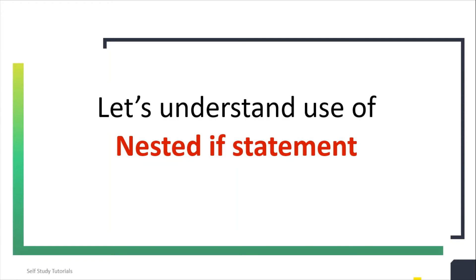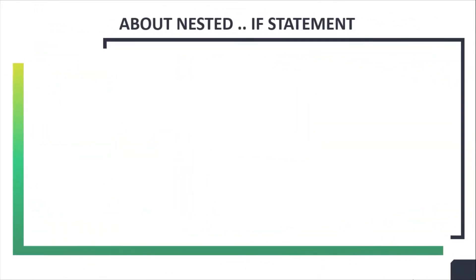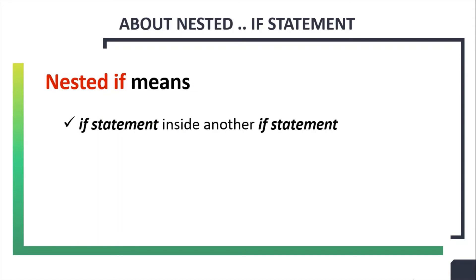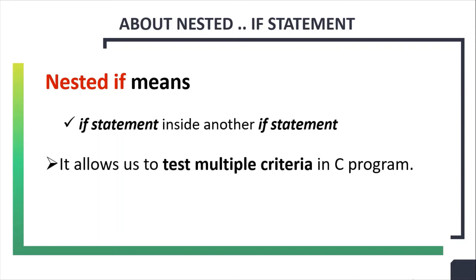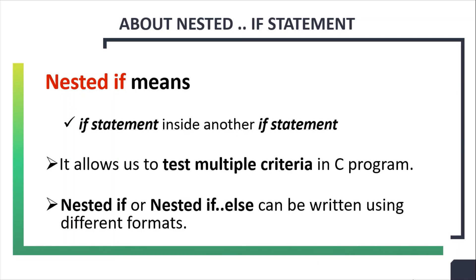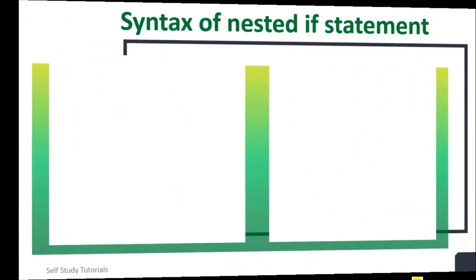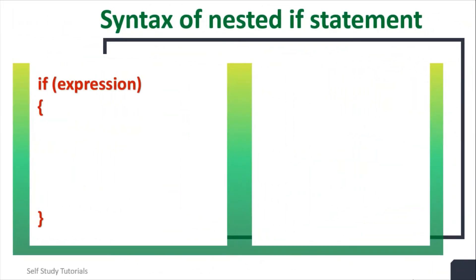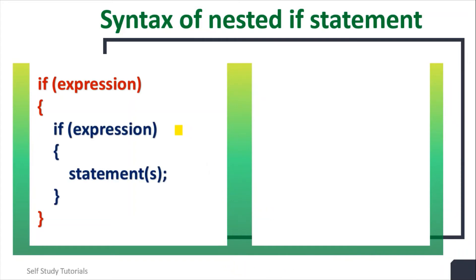Let's understand the use of nested if. Nested if means an if statement inside another if statement. It allows us to test multiple criteria in a C program. Nested if or nested if-else can be written in different formats. The basic format is an outer if with an expression, and inside it another inner if statement. Whenever the outer if expression is true, the inner if statement will be executed.